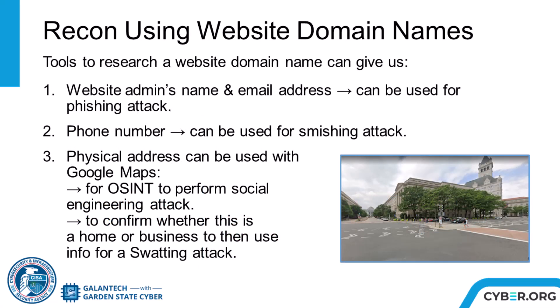Using just the website domain name, the WhoIs lookup tool will provide information that can be used for multiple types of attack. They can find the website admin's name and email address, which can be used for phishing attacks. You can find a phone number, which can be used for smishing attacks. Or a physical address can be used with Google Maps for OSINT to perform social engineering attacks, or to confirm whether this is a home or business.